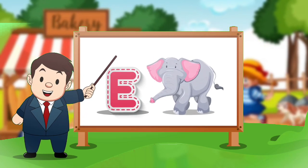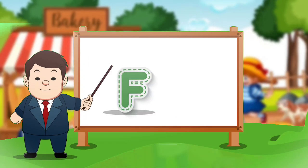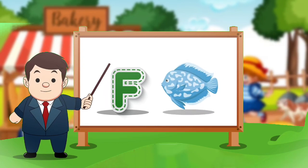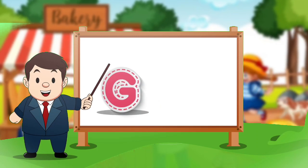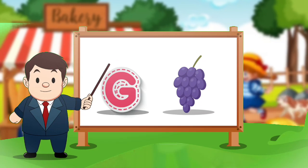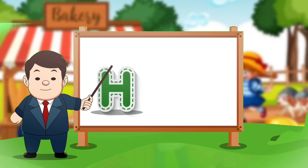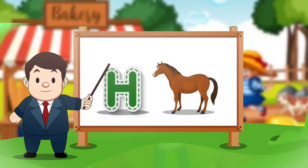E. E for elephant. F. F for face. G. G for crab. H. H for horse.